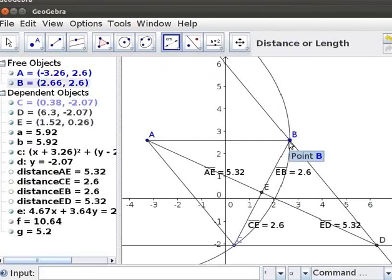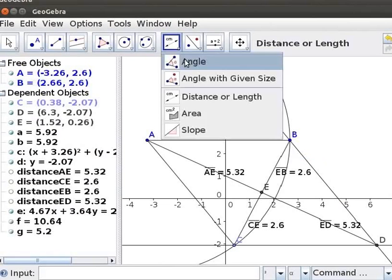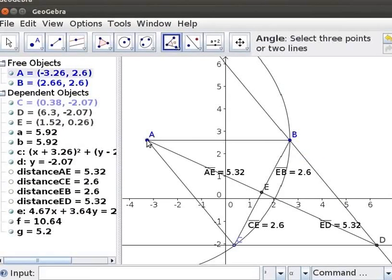Next, we will check whether the Diagonals are perpendicular bisectors. To measure the Angle, click on the Angle Tool. Click on the Points A, E, C, C, E, D.